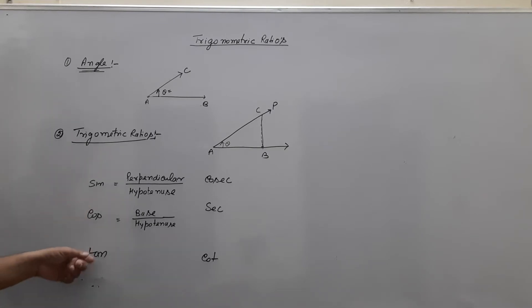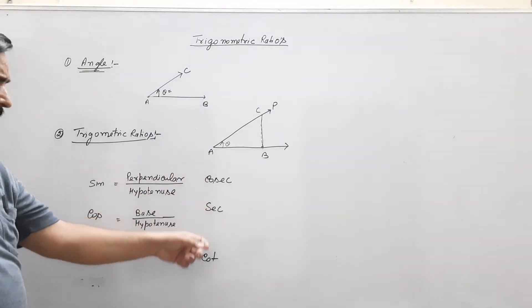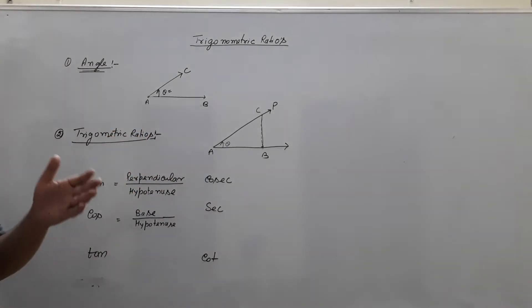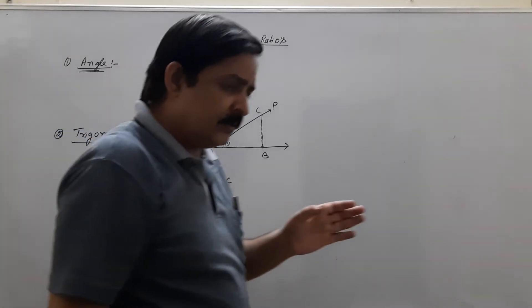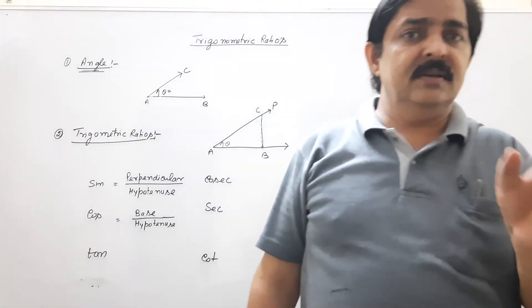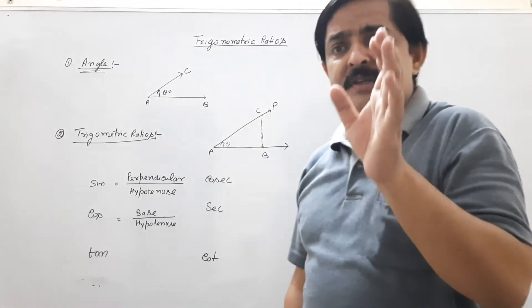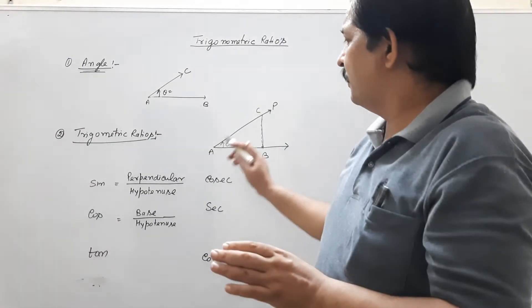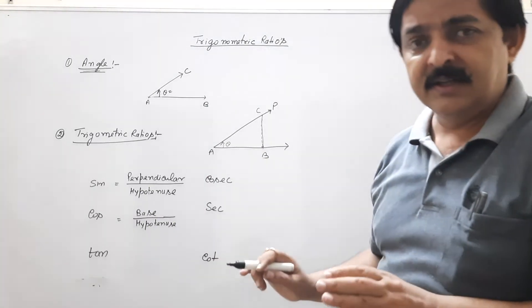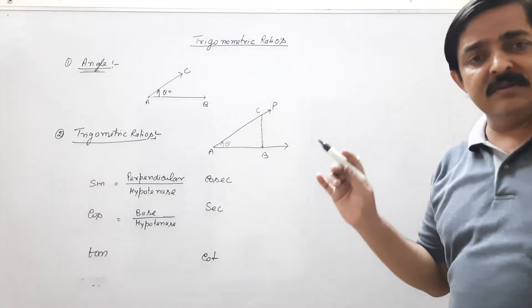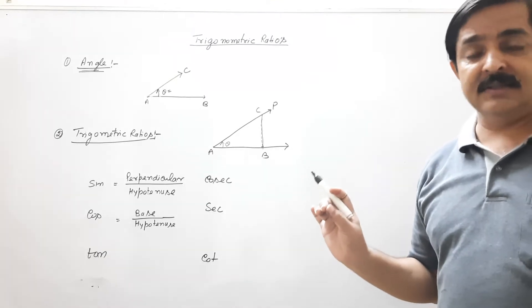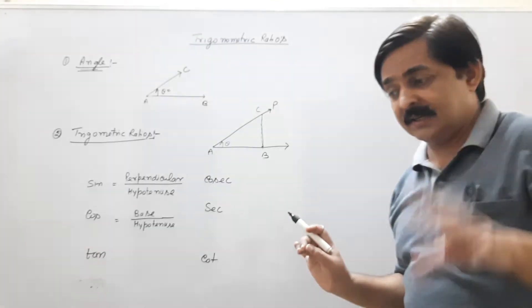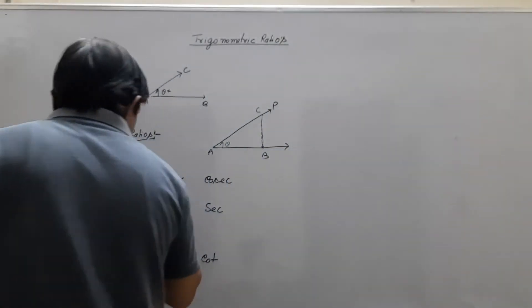Sin, cos, tan, cosec, sec and cot. These are called trigonometric ratio functions because the relation of this trigonometric function equals to the ratio of sides of right angle triangle. And this relation is always only in right angle triangle.